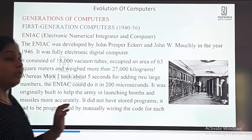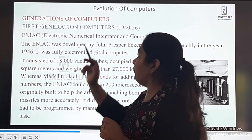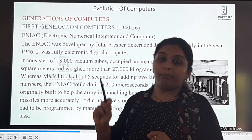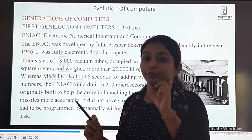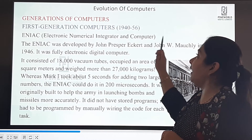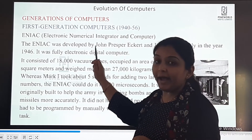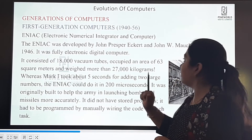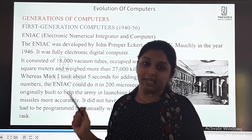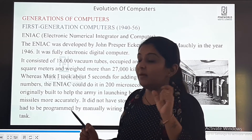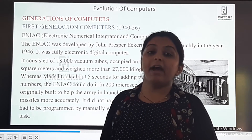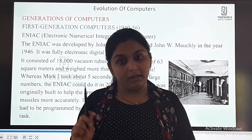The second example is ENIAC. What is the full form? Electronic Numerical Integrator and Computer — you have to remember this full form. It was developed by John Presper Eckert and John W. Mauchly in the year 1946. Remember the names. ENIAC was a fully electronic digital computer.